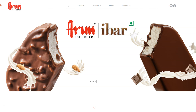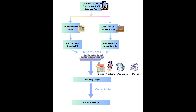Welcome to the Oracle Cloud ERP channel. In this video, I will show you how to set up general ledger from scratch for an ice cream company in Oracle Fusion Cloud. You are going to virtually create Arun Ice Creams Corporation with multiple companies, business units, departments, ice cream shops, ice cream products, and all other required setups to create your first journal.